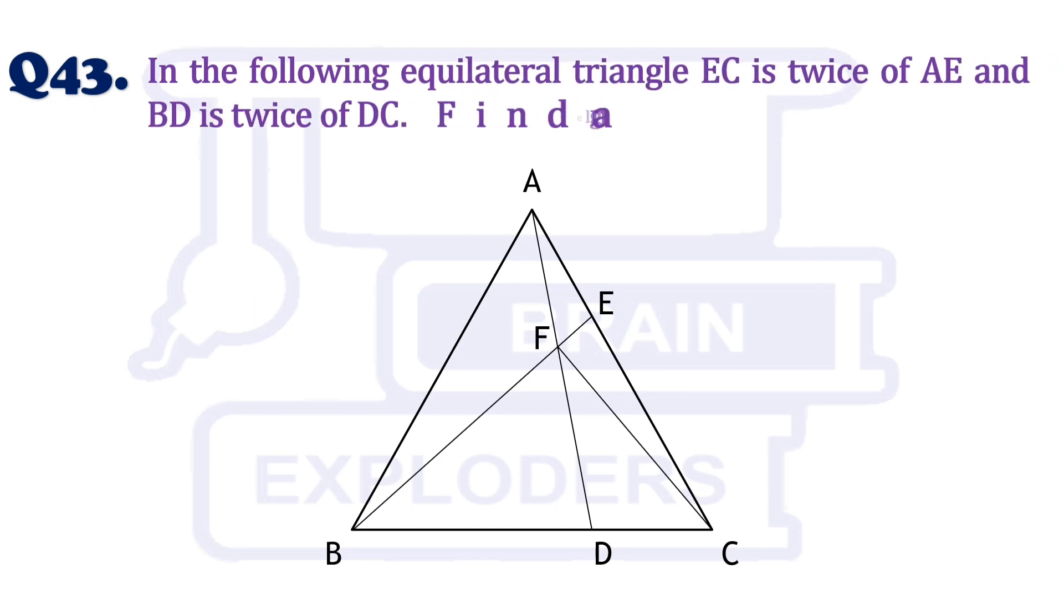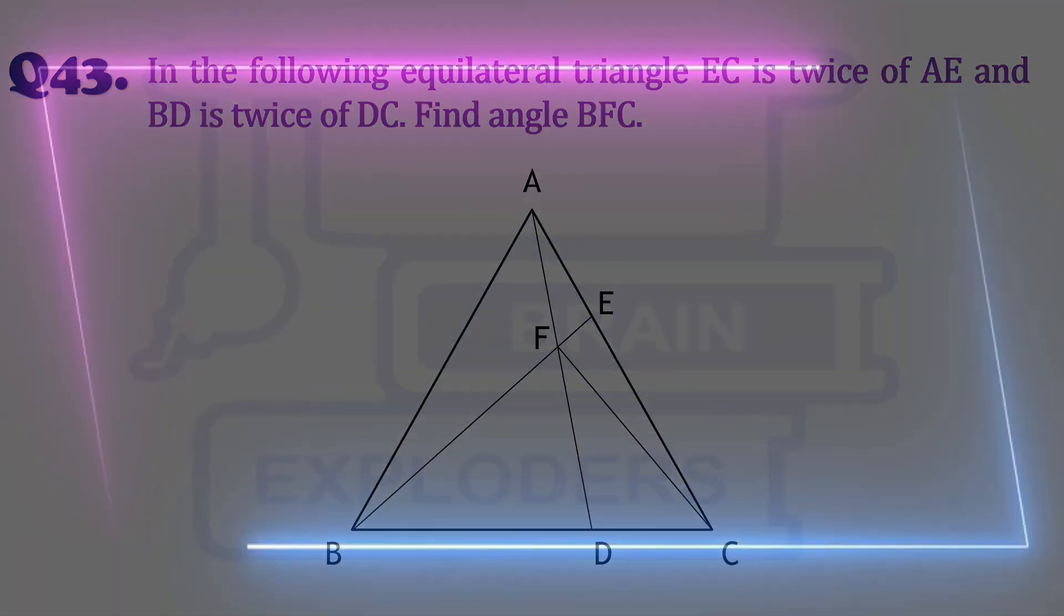In the following equilateral triangle, EC is twice of AE and BD is twice of DC. Find angle BFC.